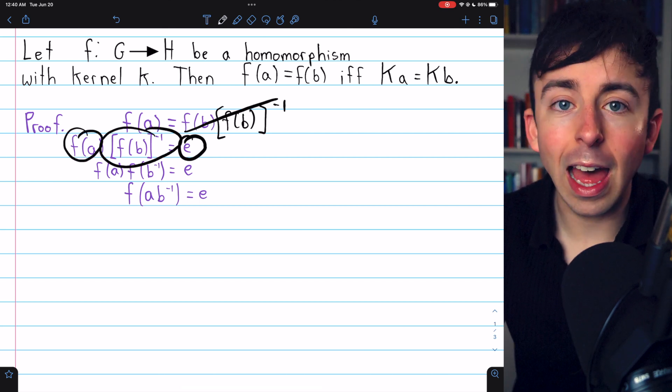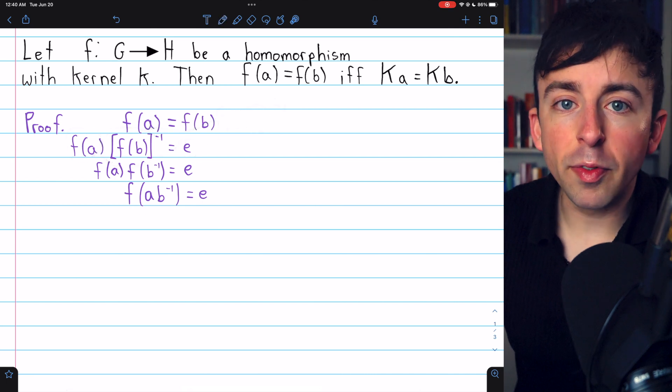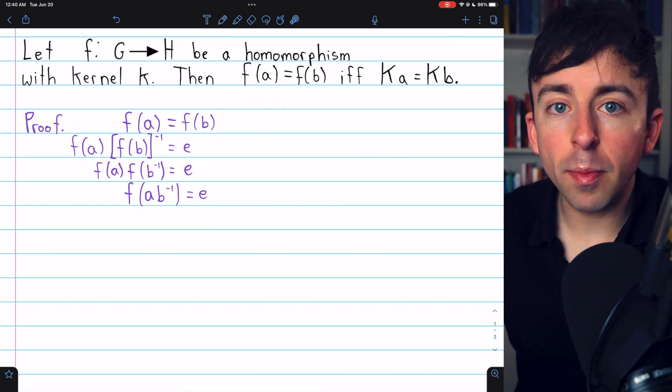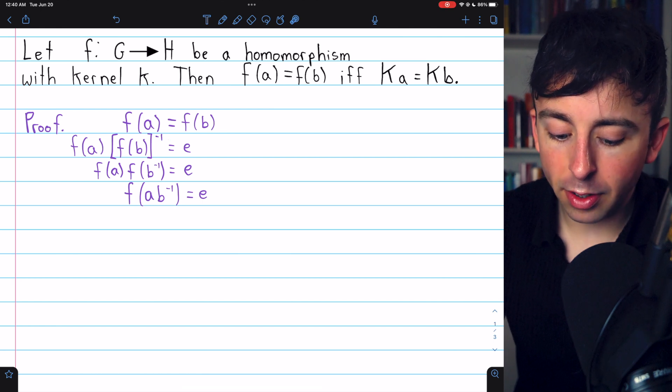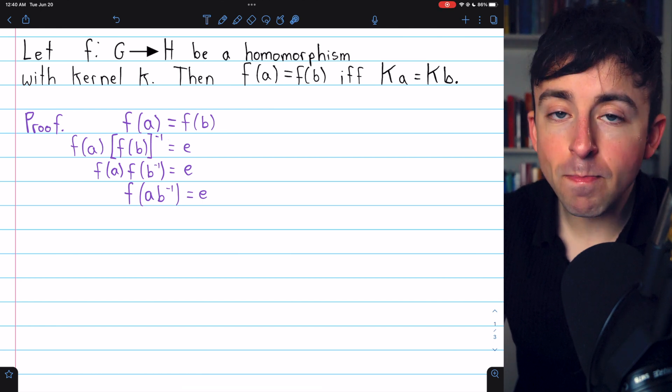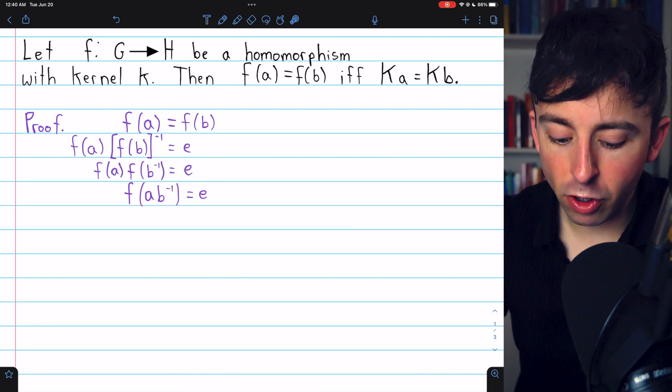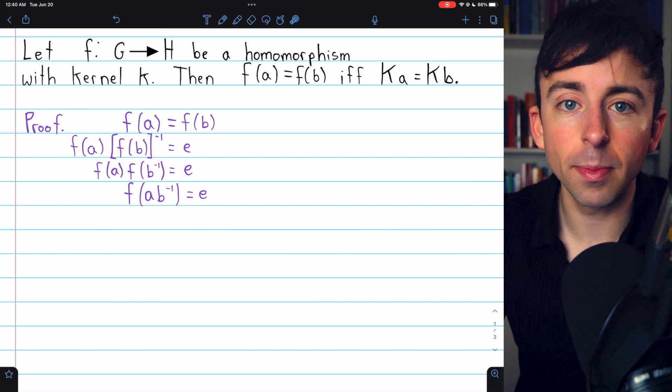On the left side, we have F(a) times F(b) inverse. We've previously proven, though, that homomorphisms map inverses to inverses. So the inverse of F(b) must be the image of F(b inverse). That's just a property of homomorphisms.